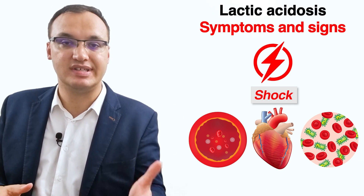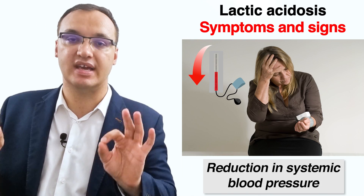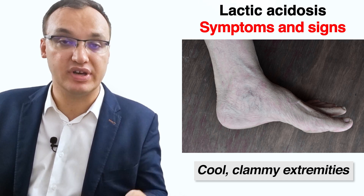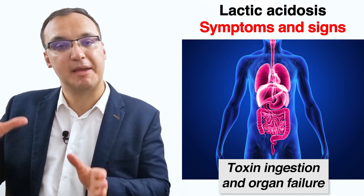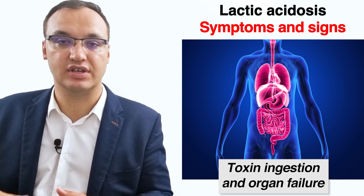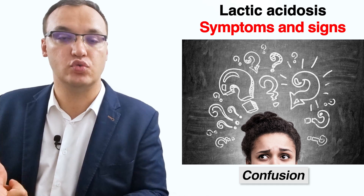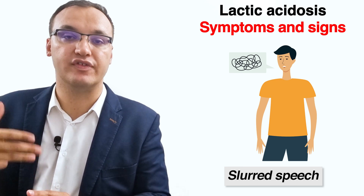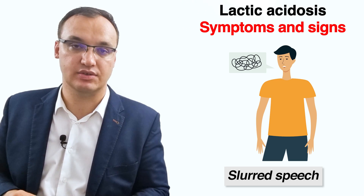In type A, you would see symptoms of shock, such as a reduction in systemic blood pressure, cool and clammy extremities in hypovolemic and cardiogenic shock, and impaired mental status. In type B, you would notice toxin ingestion and organ failure depending on the cause. Neurologic symptoms such as confusion, ataxia, and slurred speech can occur after high carbohydrate ingestion and are characteristic of D-lactic acidosis.